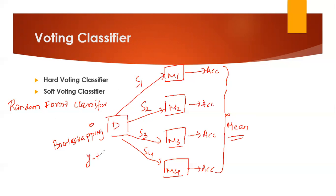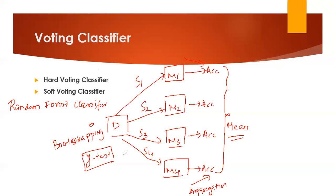But whenever we give a new test data — and this step is basically called aggregation — suppose I have my test data. For the test data, if I want to see how the output is actually predicted: since this is a classifier problem, suppose I have two categories of output. My model M1, suppose for the test data it is giving output as zero. Model M2 says the output is one. Model M3 is saying the output is one. And model M4 is saying the output is one.